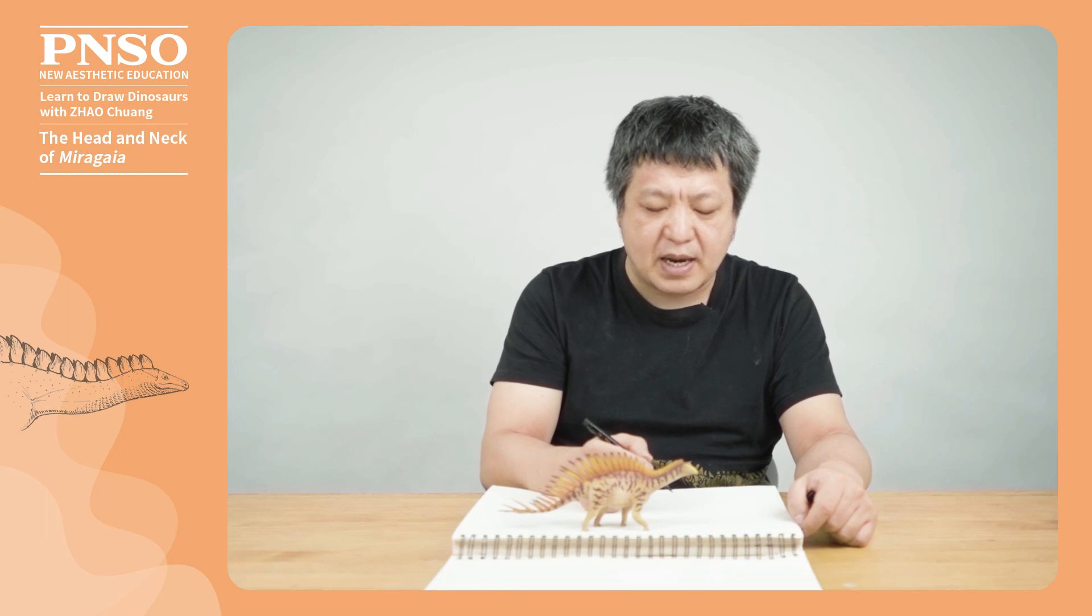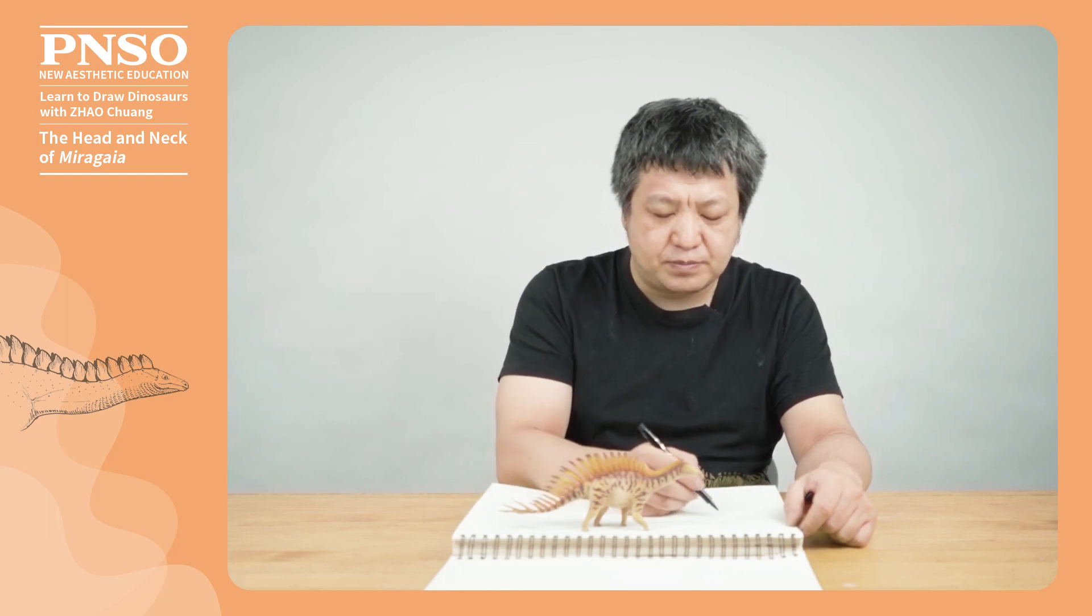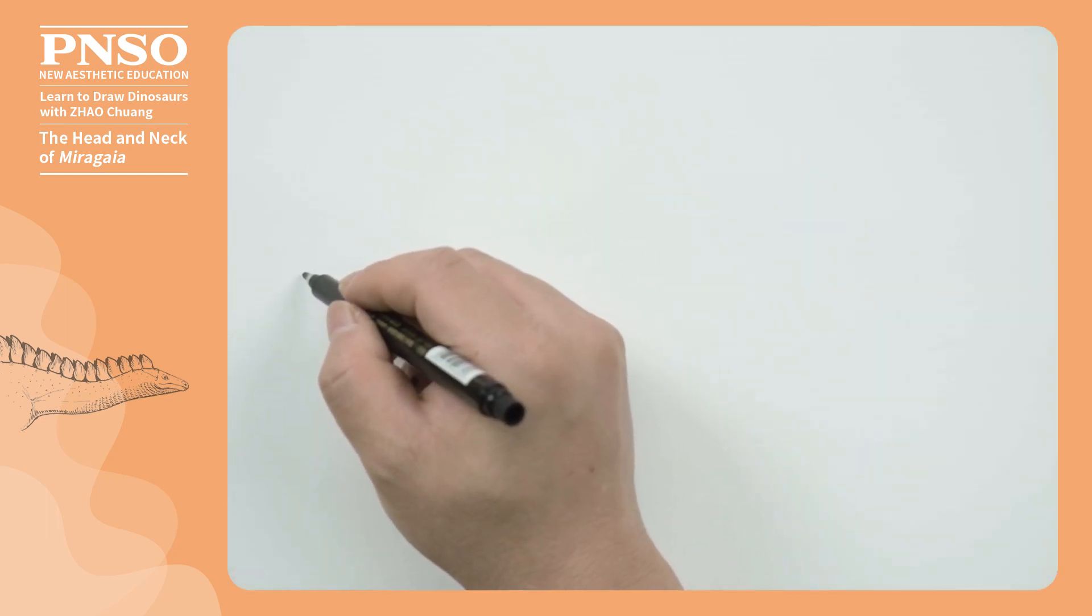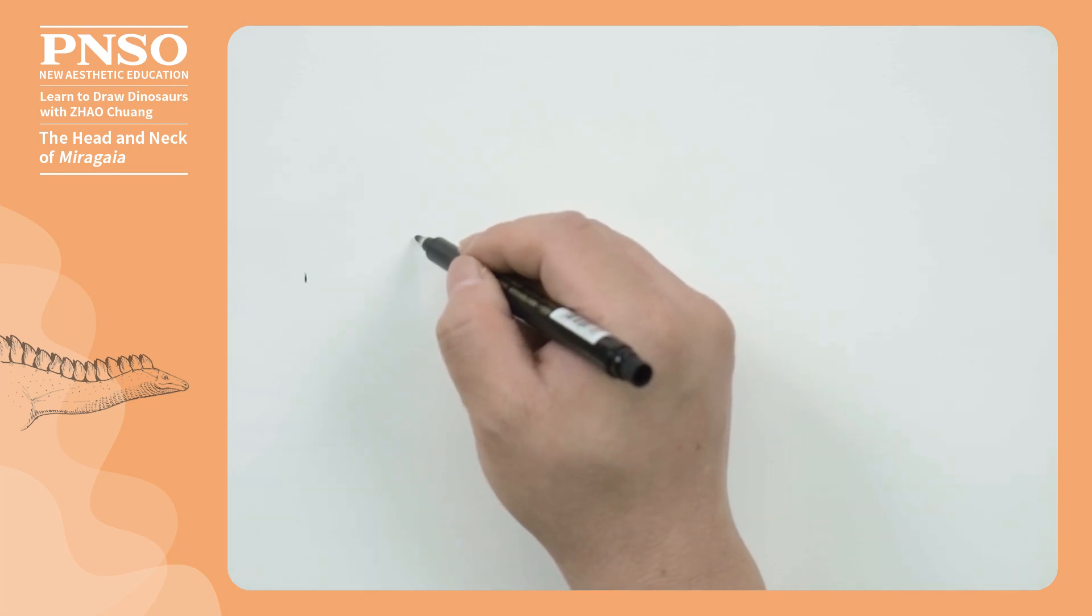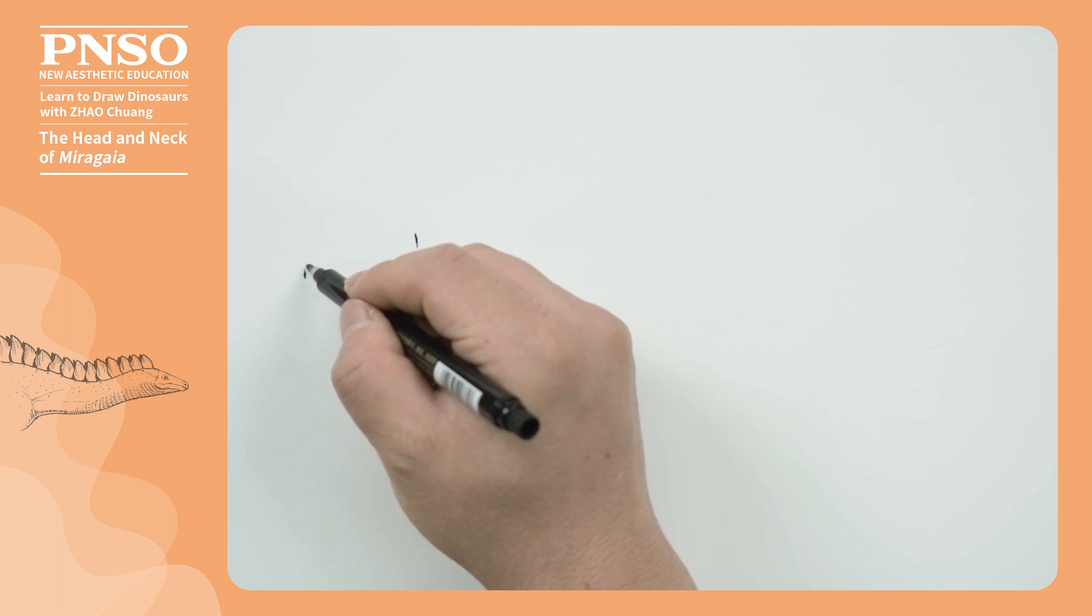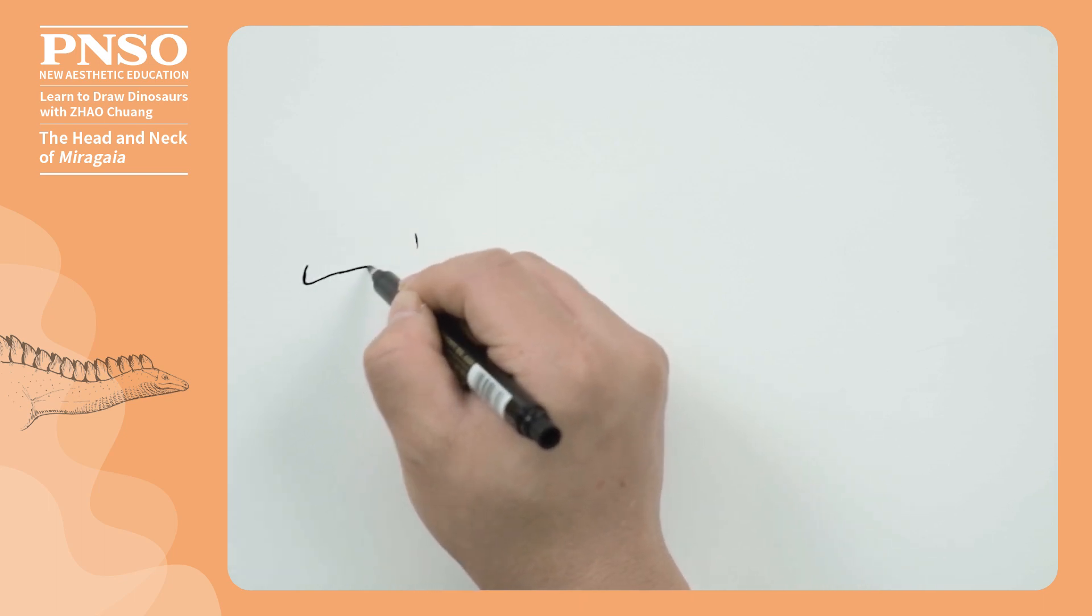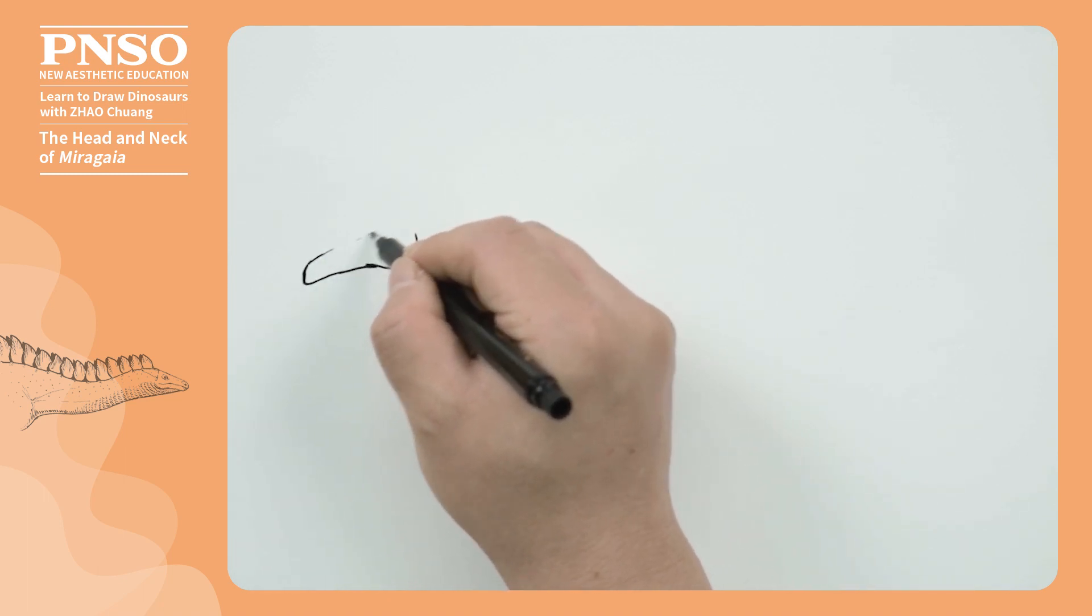Now, let's draw the head and neck of Miragaia. Starting with the head first. We draw its big mouth, and then the slender top of its head.